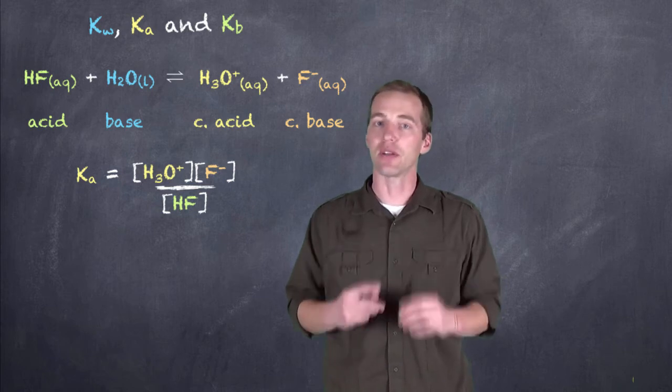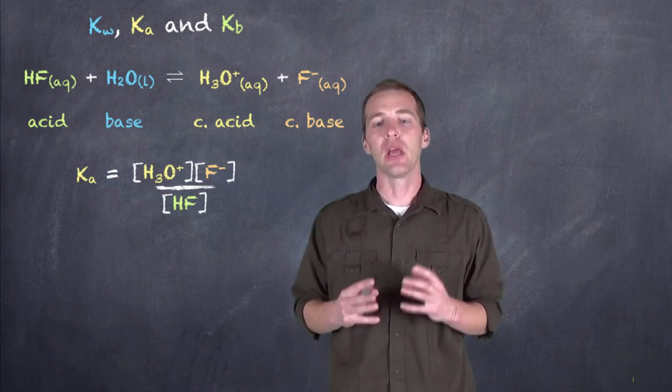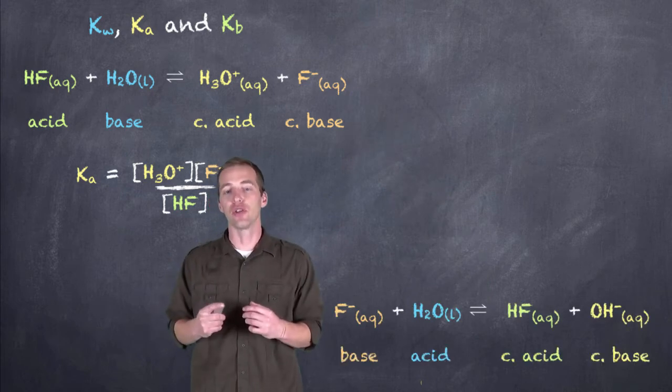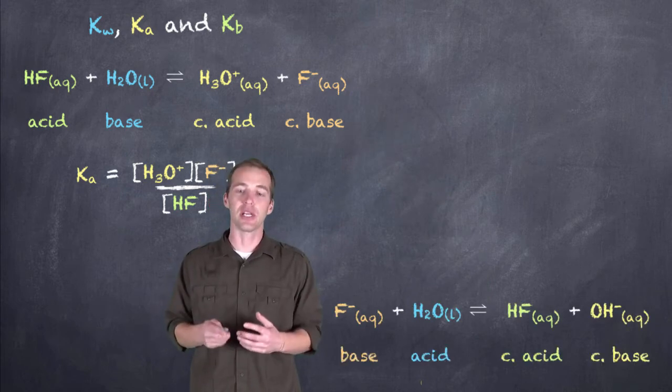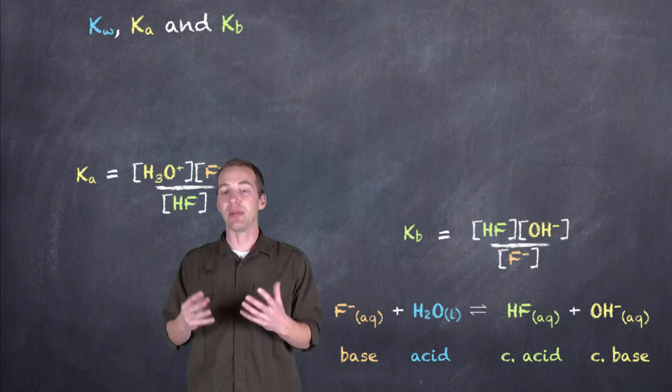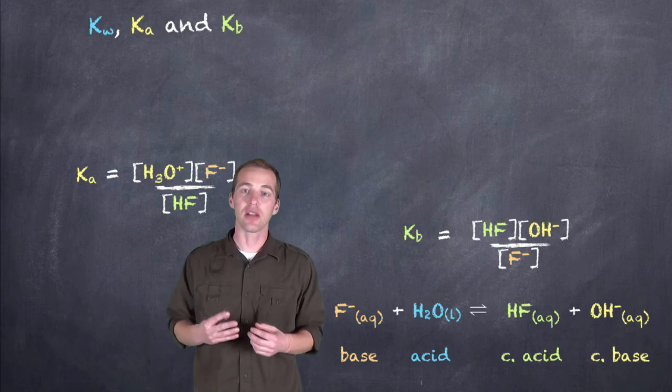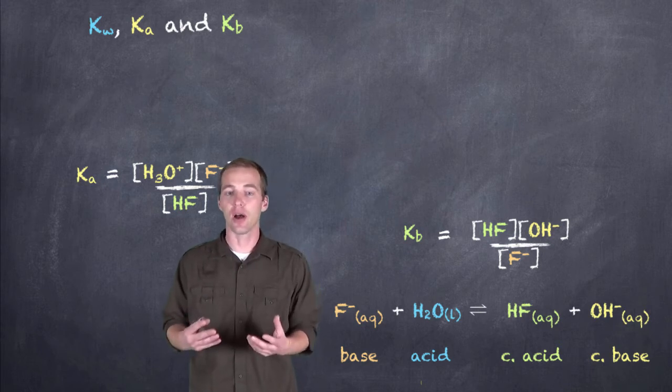And again, water is left out of that Ka expression. Well, if we were to take the conjugate base and then further react it with water so that we could derive a Kb for this particular reaction, we would have a Kb derived that would look very much like this with the hydrogen fluoride and the hydroxide in the numerator and the fluoride ion in the denominator.